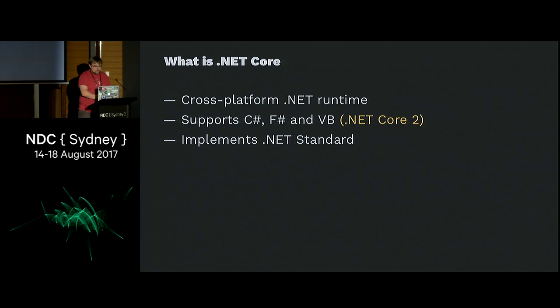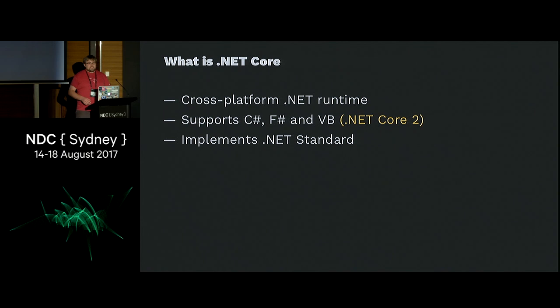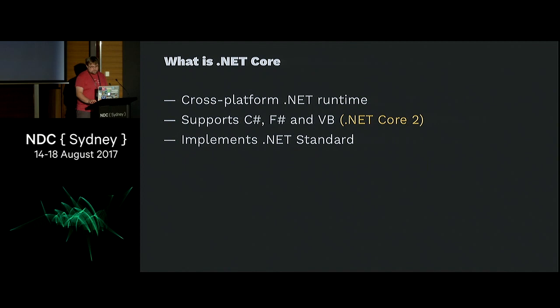So what is .NET Core? It's Microsoft's cross-platform .NET framework — it's not intended to replace the .NET framework. The .NET framework is for Windows, and .NET Core is the cross-platform implementation. It supports C-sharp, F-sharp, and VB. They implement the .NET Standard, which is basically a contract that says your runtime guarantees certain APIs. The idea is that it shouldn't matter whether you're using .NET Core, Mono, or the full .NET framework — you should be able to run any .NET program anywhere.